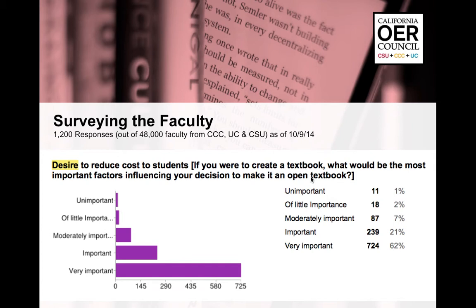We surveyed faculty about their desire to reduce costs to students if they were to create a textbook. 62% say it's very important to them, and only 2% say it's of little importance. So reducing cost is very important to a lot of faculty, and peer review is equally important.